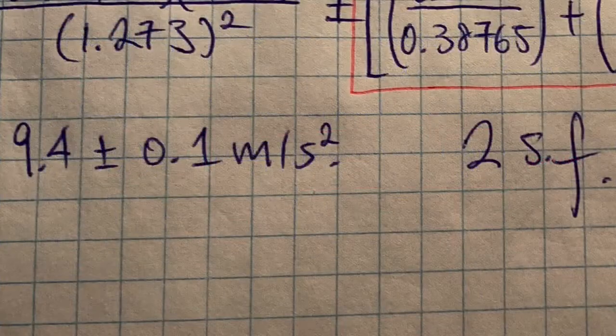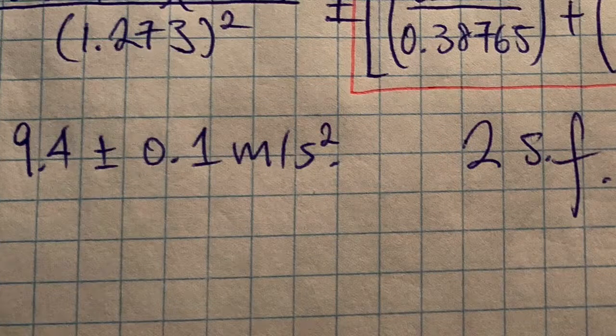And therefore, our final answer for gravity is 9.4 plus or minus 0.1 meters per second squared.